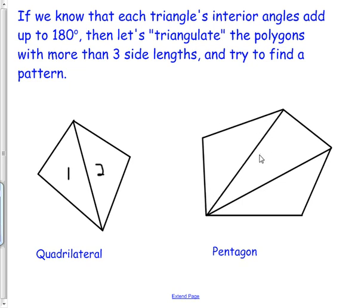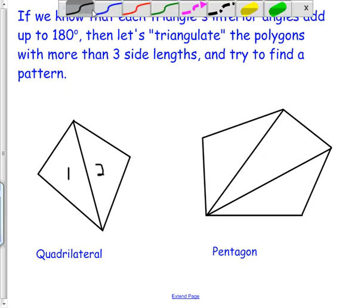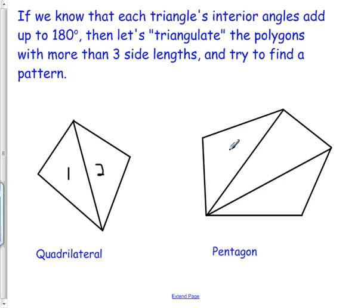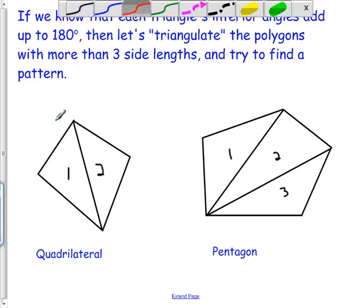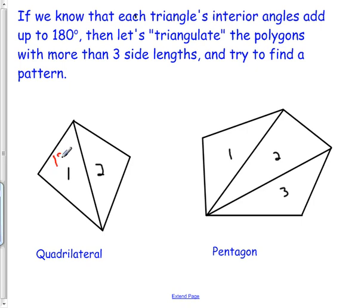Okay, so we have three triangles on this one. And let's write those in here. There's one, two, and three. And so, each triangle, we know, contributes 180 degrees. Each triangle contributes 180 degrees to the total sum, to the total of the interior angles.